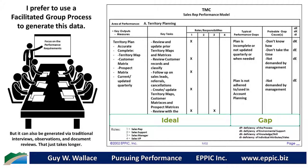Why do I use probable gap cause instead of root gap cause? Because in the group process that I use, I simply don't have time to ask why and so what five times or more to generate the real root cause.